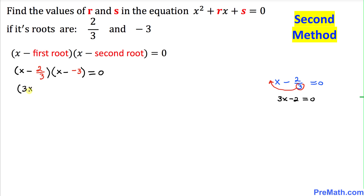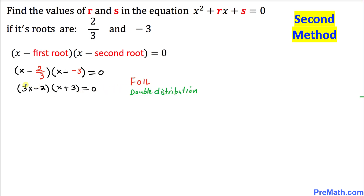We have two negative signs multiplying, so negative times negative is positive, giving us x plus 3. So the expression becomes 3x minus 2 times x plus 3 equal to 0. Now we are going to use the FOIL method: 3x times x is 3x squared, 3x times 3 is plus 9x, negative 2 times x is negative 2x, and negative 2 times 3 is negative 6, equal to 0.